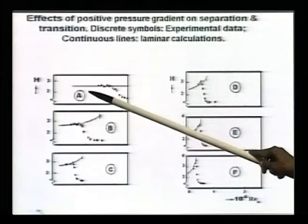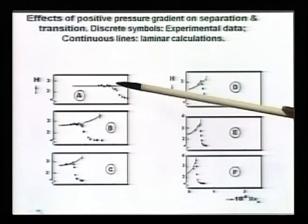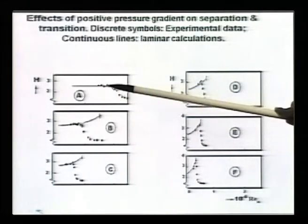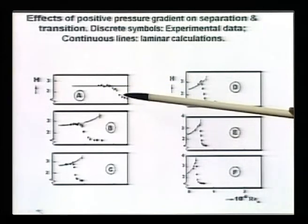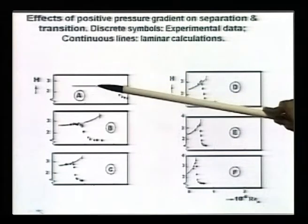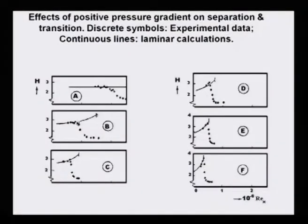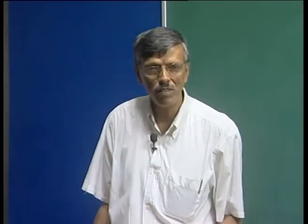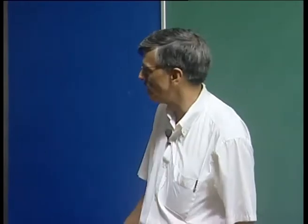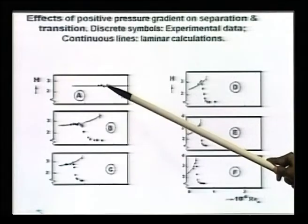Case A corresponds to a zero pressure gradient boundary layer. Corresponding to that, the H value remains flat at 2.59. But if I go to the lab and do the experiment, I do not see it remaining flat - it actually fluctuates a little bit and then it drops. What does it signify for H to drop?